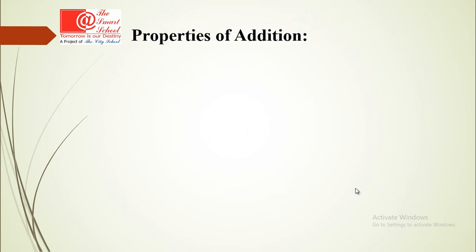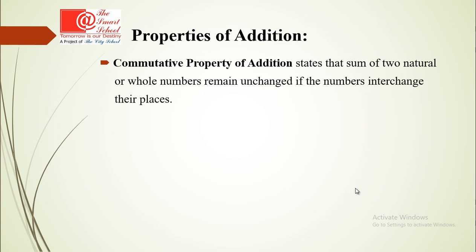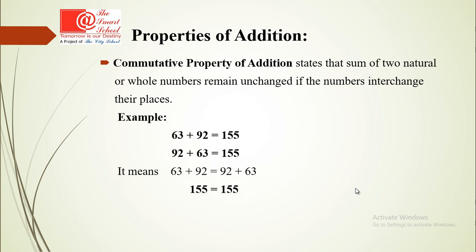First, the commutative property of addition states that the sum of two natural or whole numbers remains unchanged if the numbers interchange their places. For example, 15 plus 7 equals 22, and 7 plus 15 also equals 22. Similarly, 63 plus 92 equals 155, and 92 plus 63 equals 155. So commutative property of addition is proved.